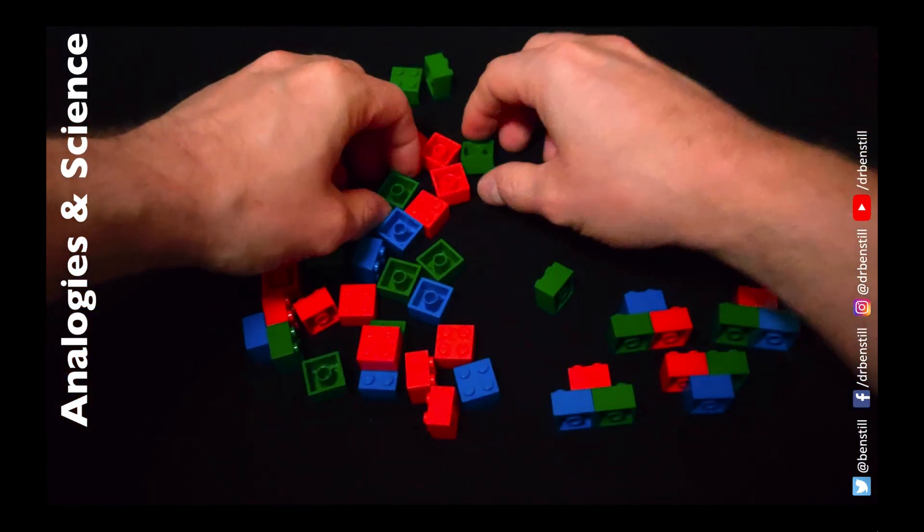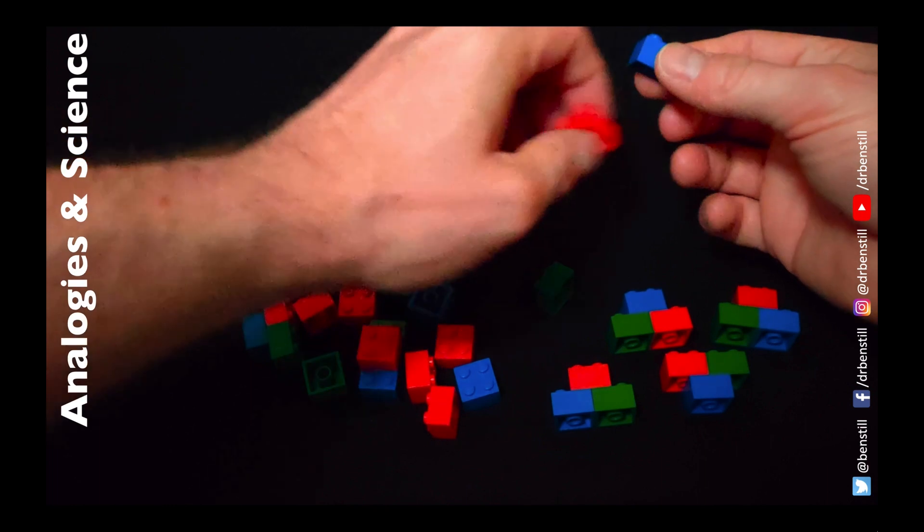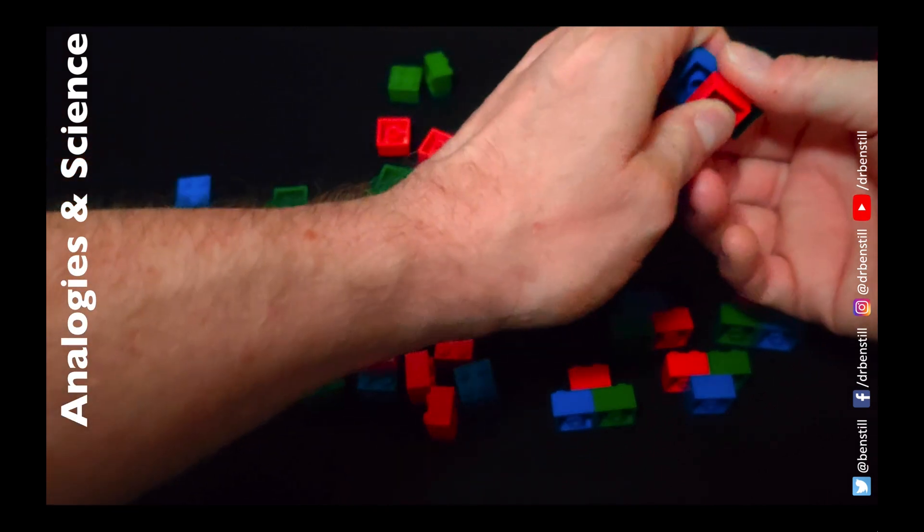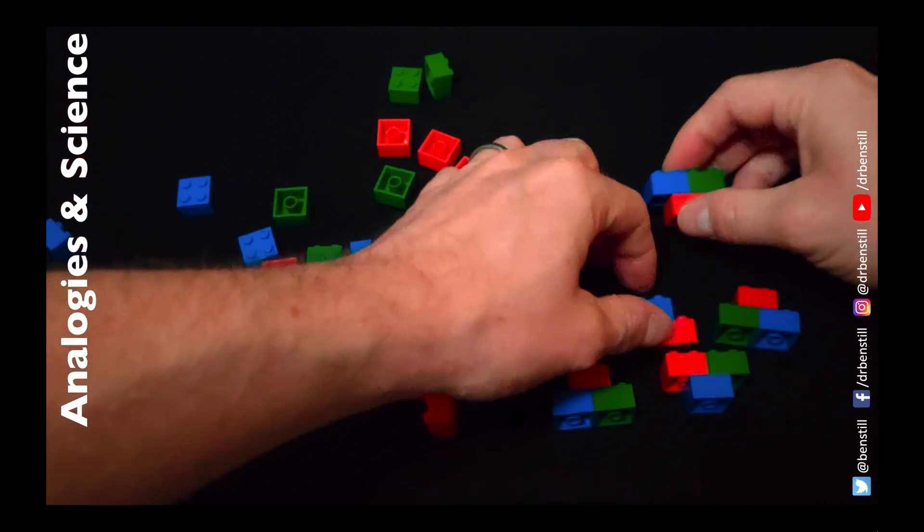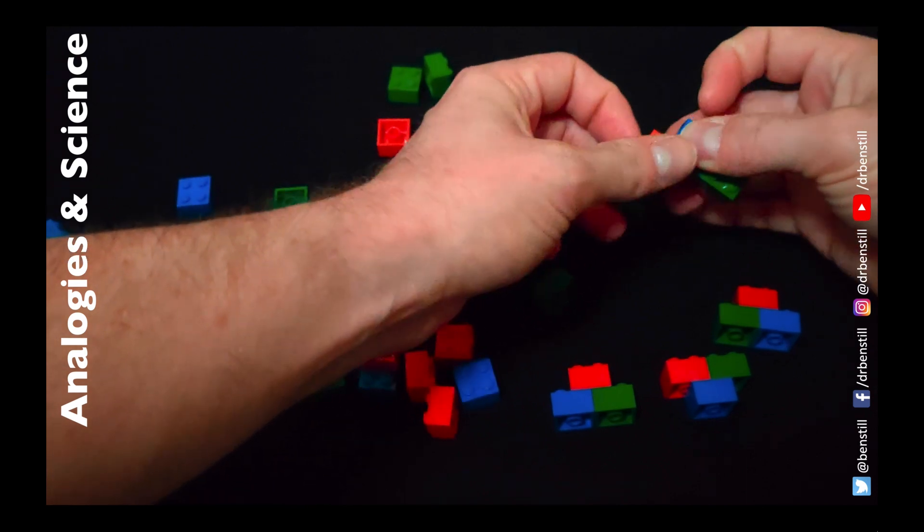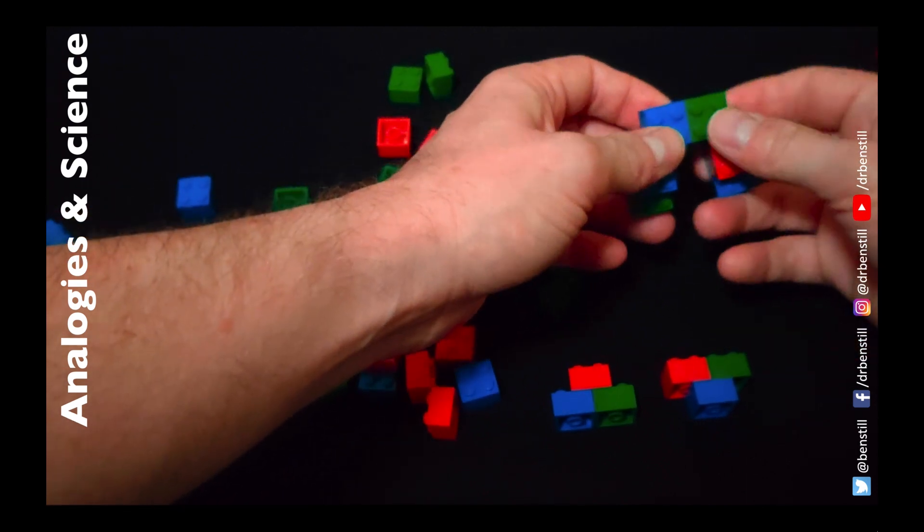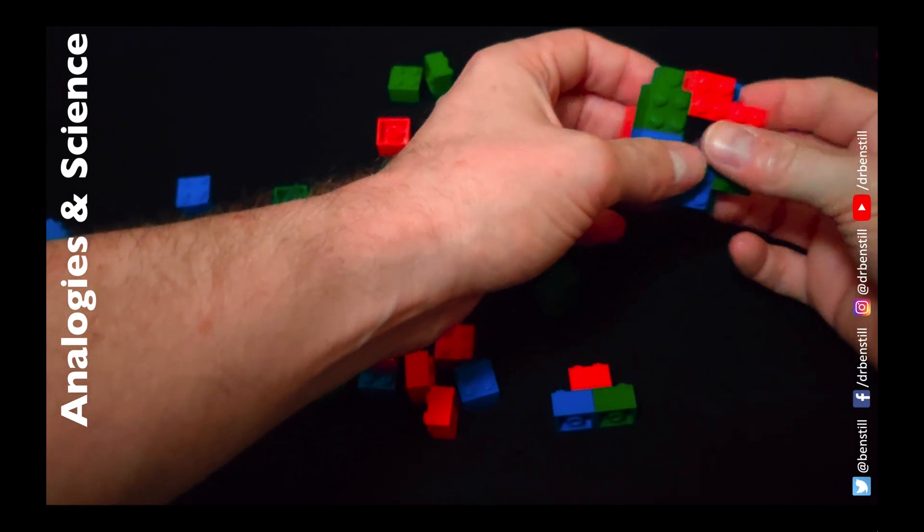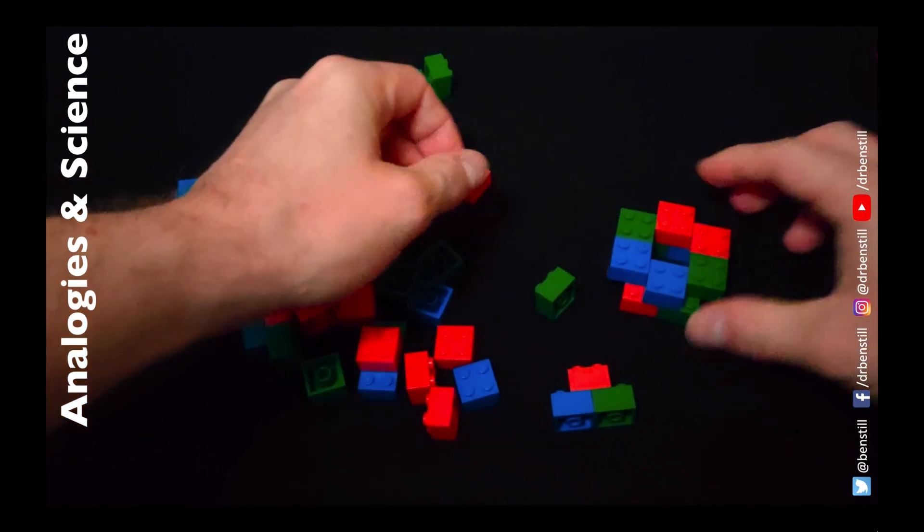So we get the building blocks and we also now need to figure out what are the construction rules. And the construction rules of nature are encoded in the forces of nature. And the forces of nature tell us how to piece these particles together to form ever more complex objects.